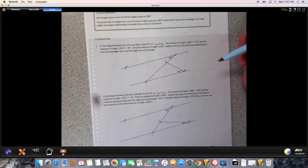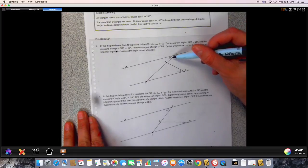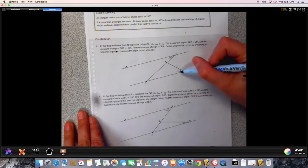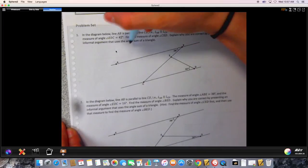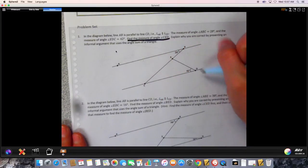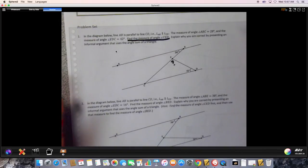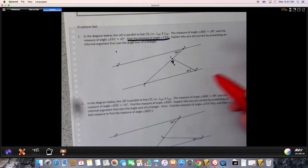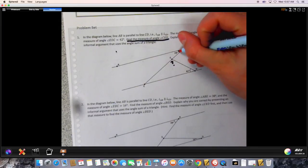We're going to do number 1 together. In the diagram below, AB is parallel to CD. We can see that the measure of ABC is 28 degrees, that's right here, that's given. The measure of EDC is 42 degrees, that's also given. It says find the measure of angle CED, so that's what we're looking for. CED is right here. Explain why you are correct presenting an informal argument using angle sum of a triangle.